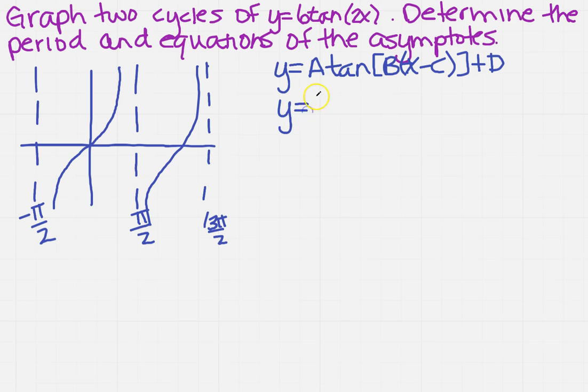So remember, everything in front of the bracket stays the same. So I've got 6 tangent of, I need to factor the 2 out, I get x minus 0 plus 0. So, so far, so good.